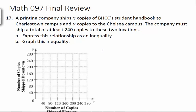A printing company ships x copies of BHCC's student handbook to a Charleston campus, and y copies to the Chelsea campus. The company must ship a total of at least 240 copies to these two locations. Part A expresses this relationship as an inequality. Well, we know we have some sent to Charleston and some sent to Chelsea, and that has to be at least 240. It can be greater than, but can't be smaller than.